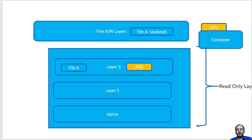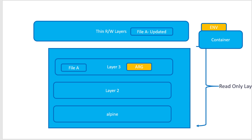Let us understand about arguments and environmental variables as part of a Dockerfile. Whenever I am creating an image, there will be a requirement not to hard code any value and pass it dynamically when building the image. Also, when a container is created, I want to set an environmental variable so that all application processes running within the container can access it. For that, we are going to use two verbs within the Dockerfile: one is ARG and another is ENV.